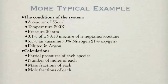A more typical example consists of a more complex mixture of species, each given in particular units. The calculations are not particularly difficult, but sometimes require bookkeeping and the conversion of units. Here we have the condition of the system with a reactor of 35 cm³, temperature, and pressure. We are talking about a more complex mixture: 0.1% of a 90-10 mixture of n-heptane and iso-octane, complicated with 5.5% of air, which itself is a mixture of 79% nitrogen and 21% oxygen, and all of this is diluted in argon. We should be able to calculate the partial pressures, number of moles, mass fractions, and mole fractions of each species.